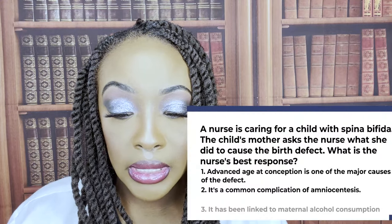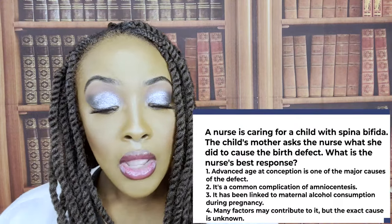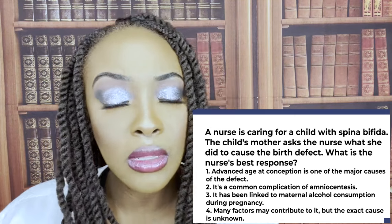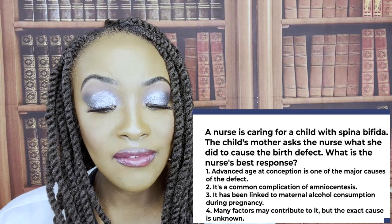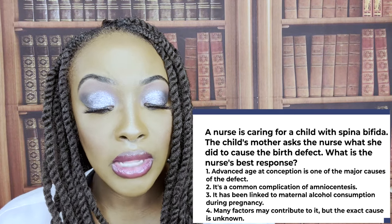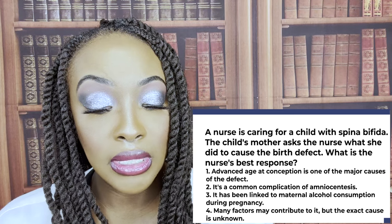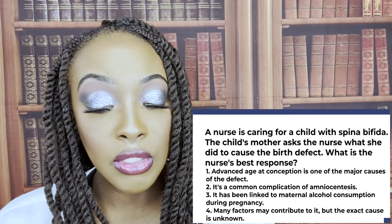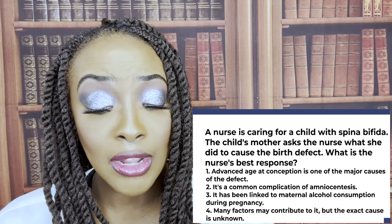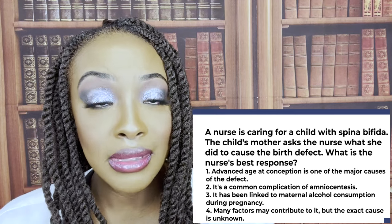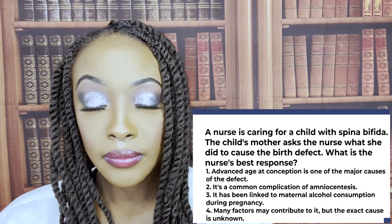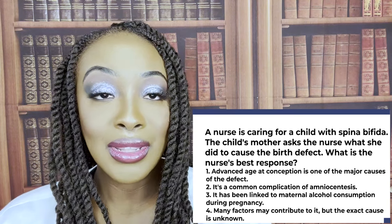Next question. A nurse is caring for a child with spina bifida. The child's mother asked the nurse what she did to cause the birth defect. What's the nurse's best response? One: advanced age at conception is a major cause. Two: it's a common complication of amniocentesis. Three: it's been linked to maternal alcohol consumption during pregnancy. Or four: many factors may contribute to it, but the exact causes are unknown. The correct answer is four.